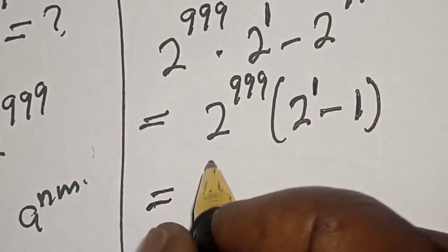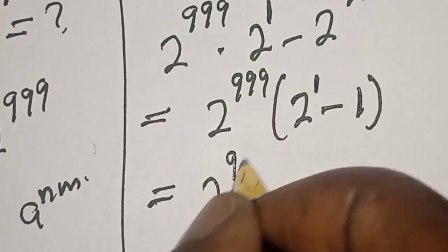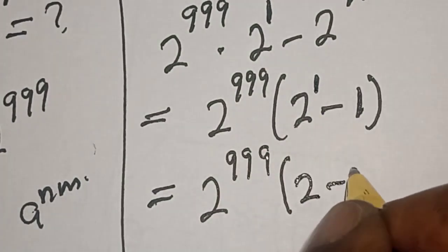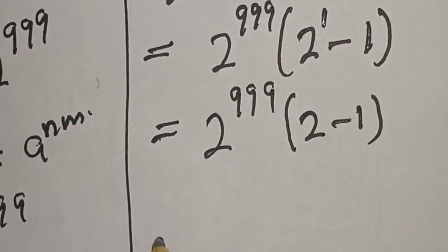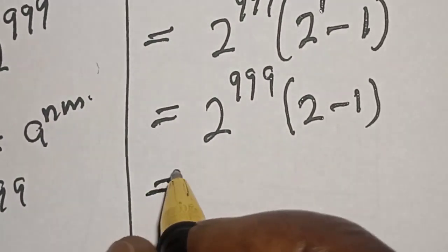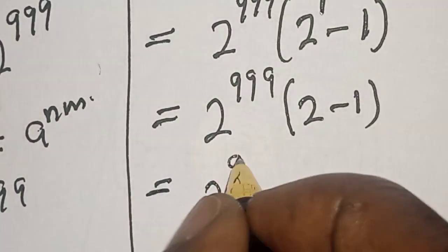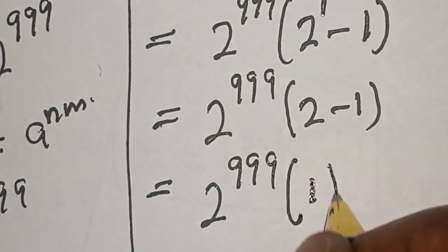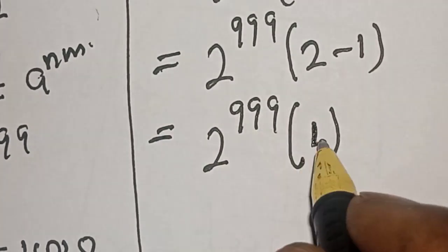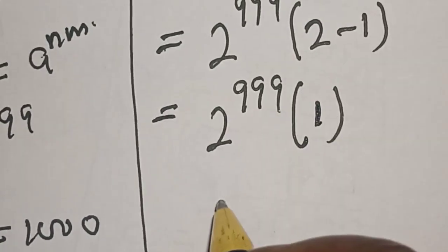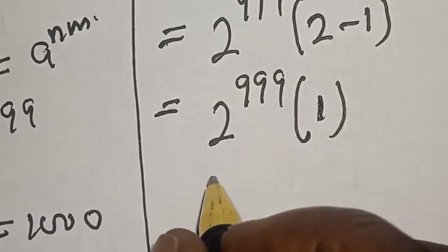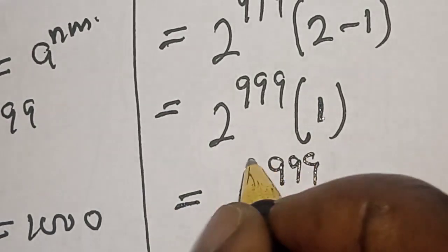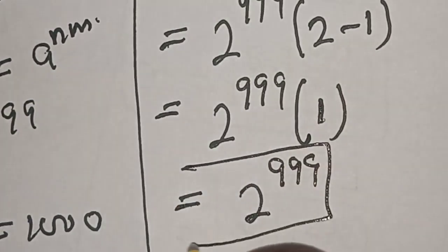Then we factor: 2 raised to power 1 is the same as 2, minus 1. This equals 2 raised to power 999 times (2 minus 1), which is 1. If you multiply 2 raised to power 999 by 1, you get 2 raised to power 999. So the final answer is 2 raised to power 999.